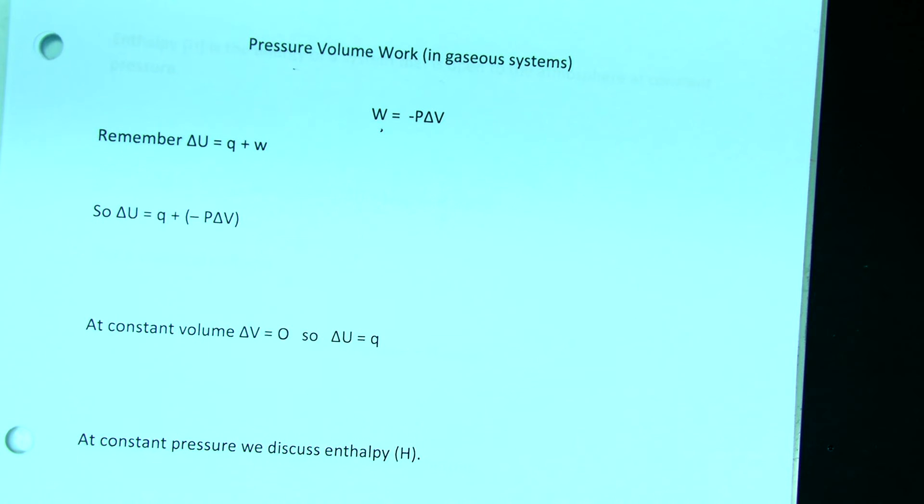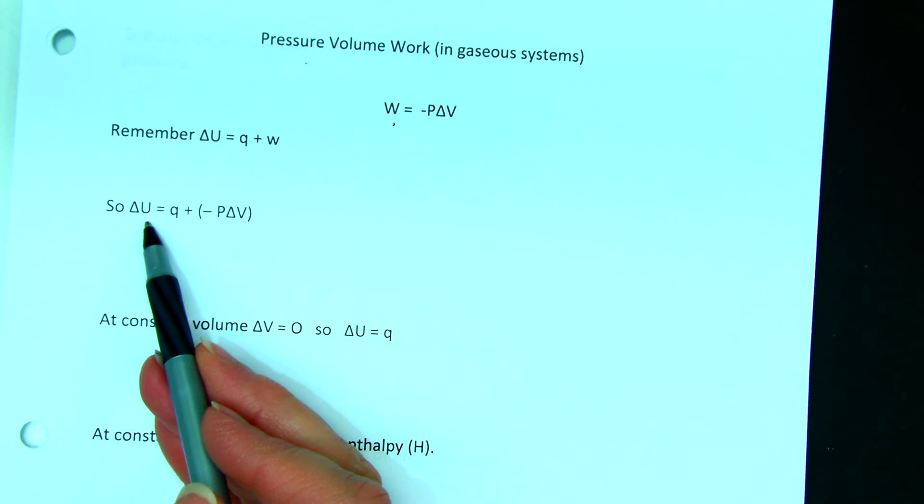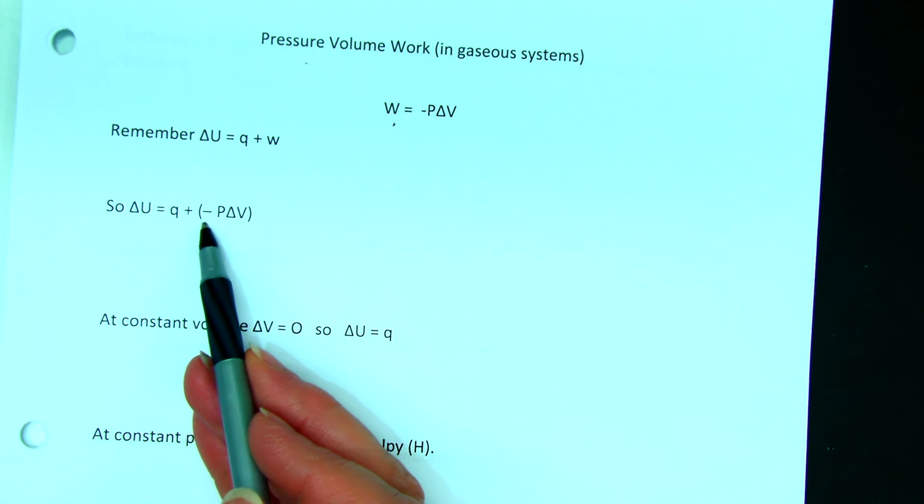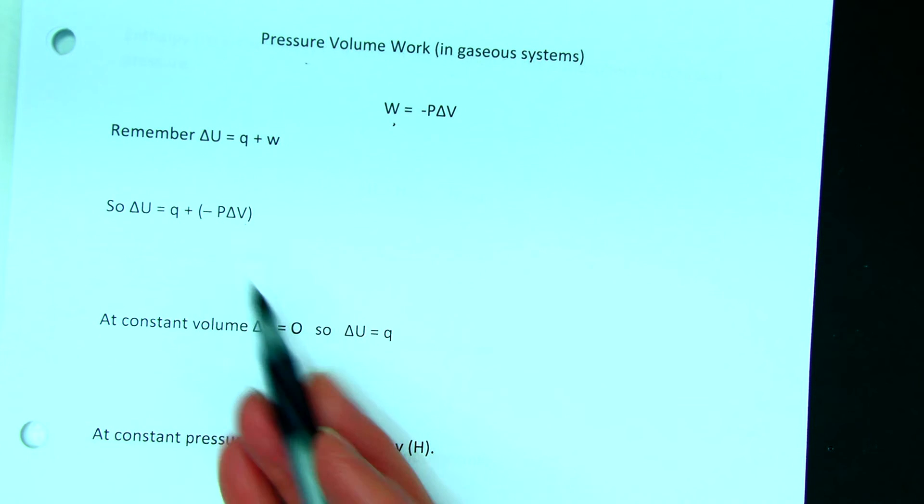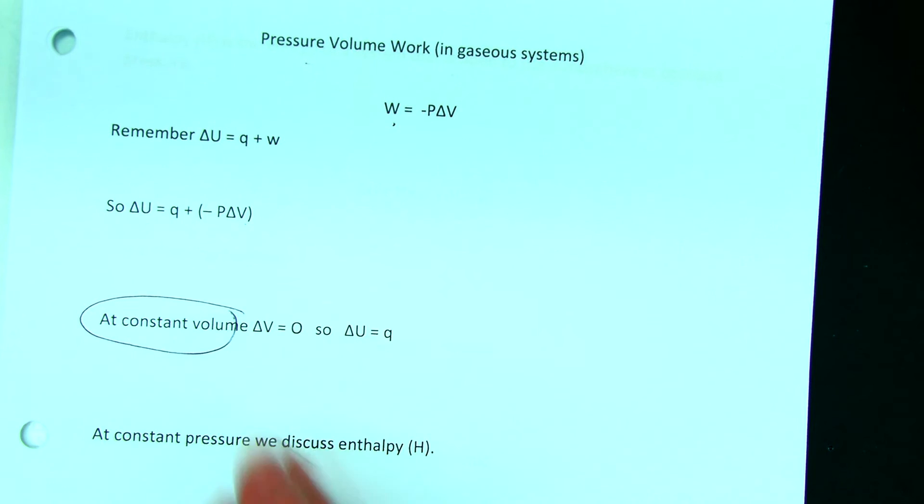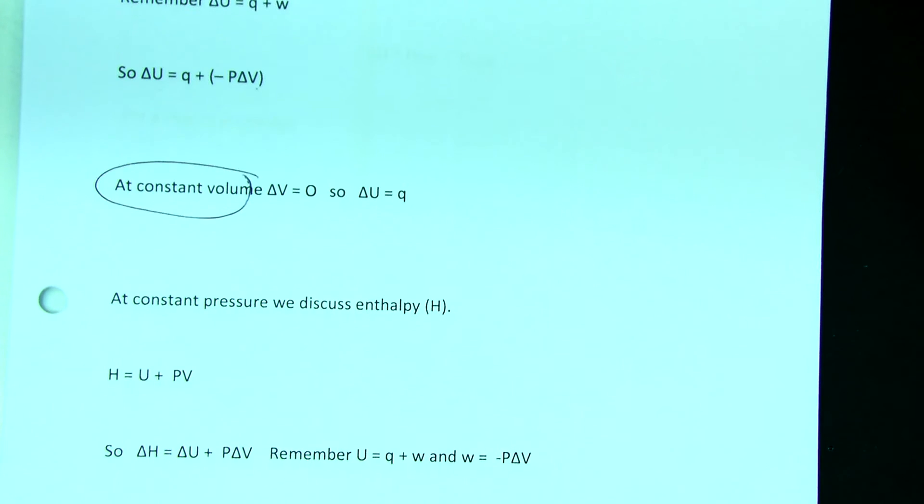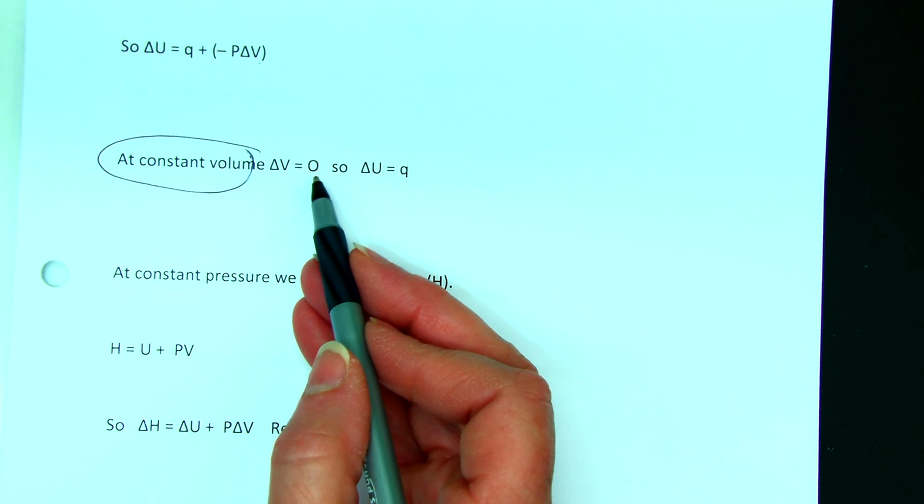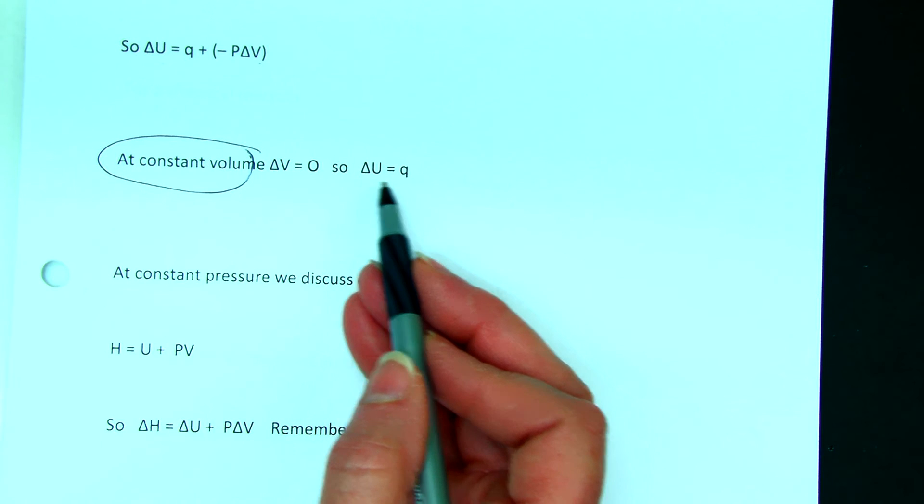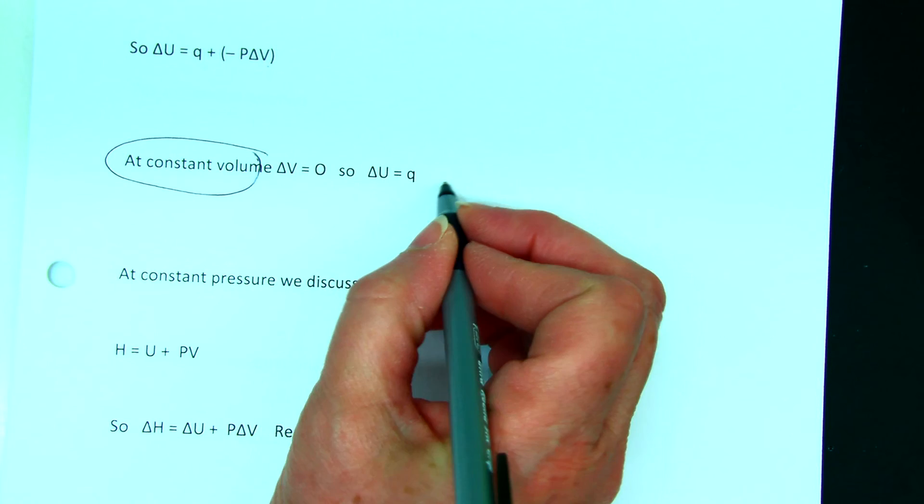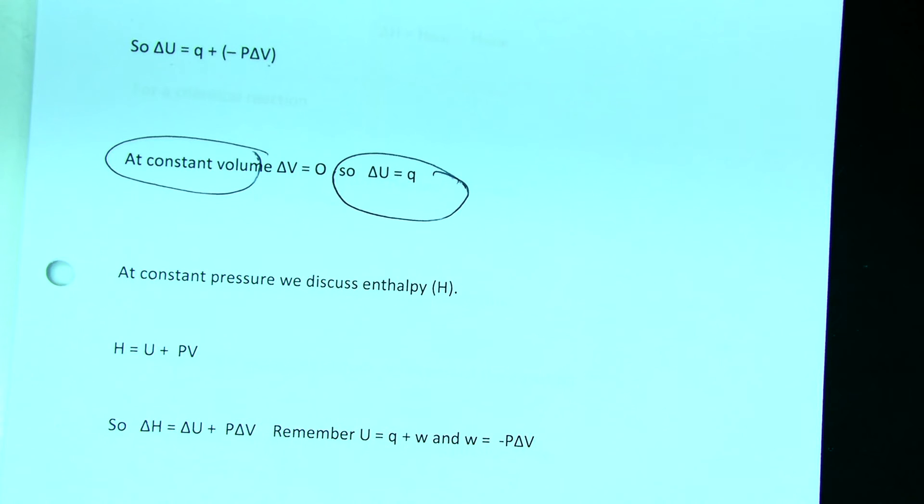So if we say that W is negative P delta V and delta U is Q plus W, then delta U is equal to Q plus a negative P delta V. If we hold our system at constant volume because we're in a sealed container, then delta V is zero, so delta U is equal to Q. So if we are at a constant volume system, we only have to worry about heat. That's what's important to us in chemistry.